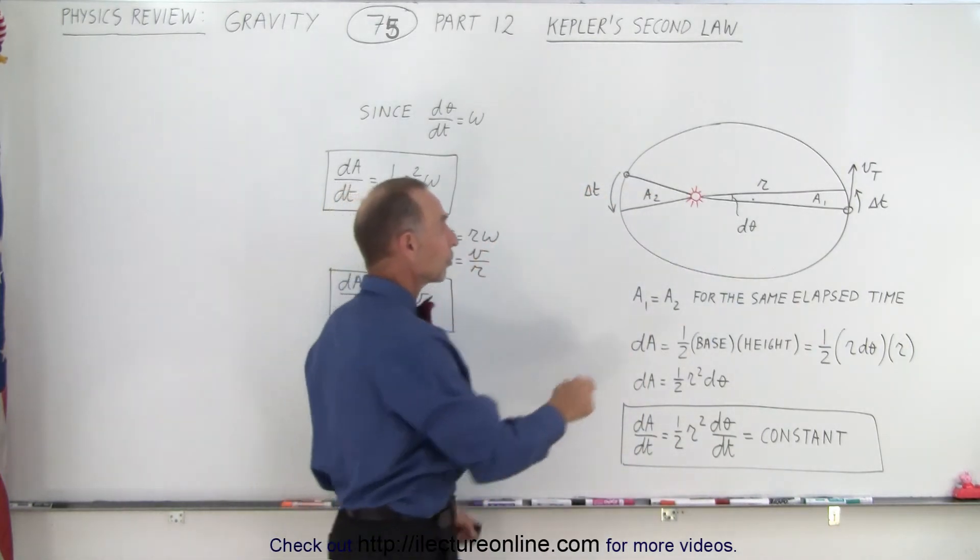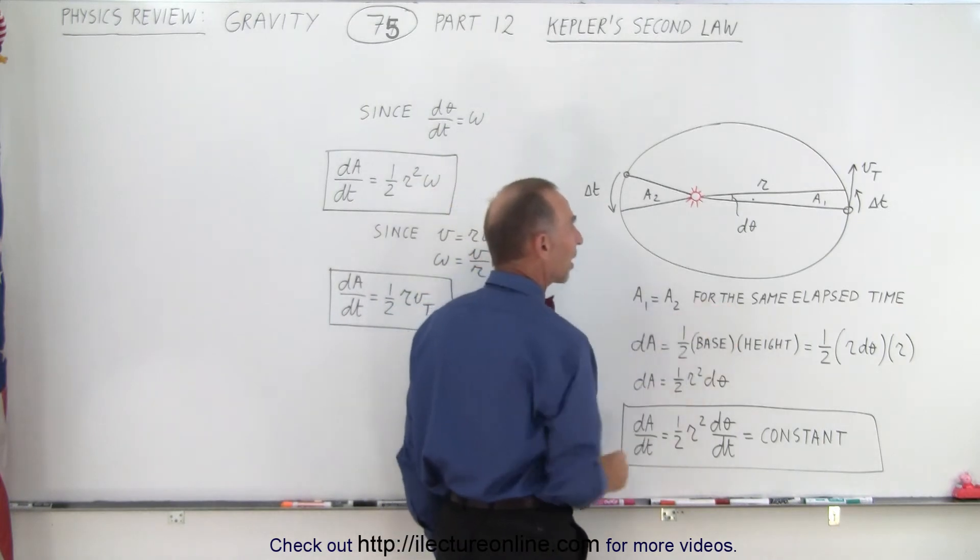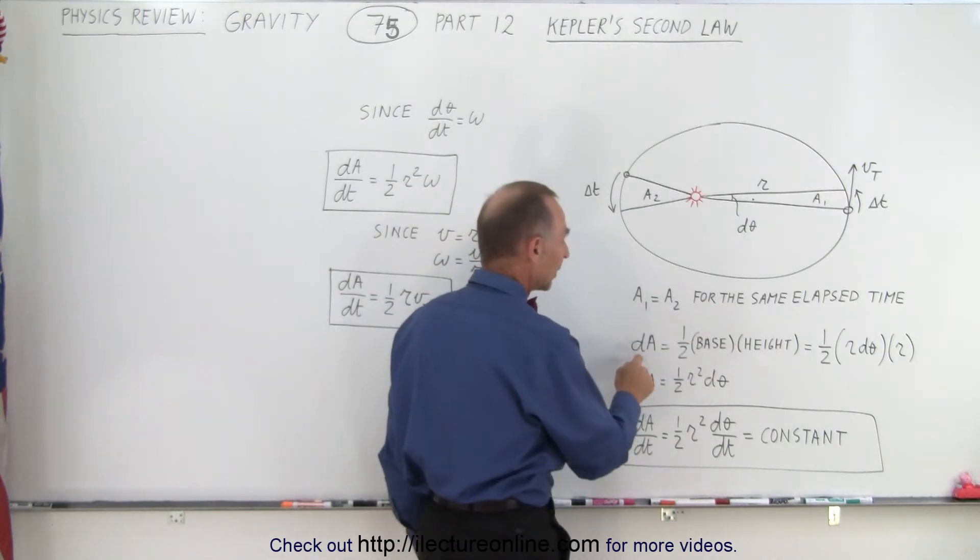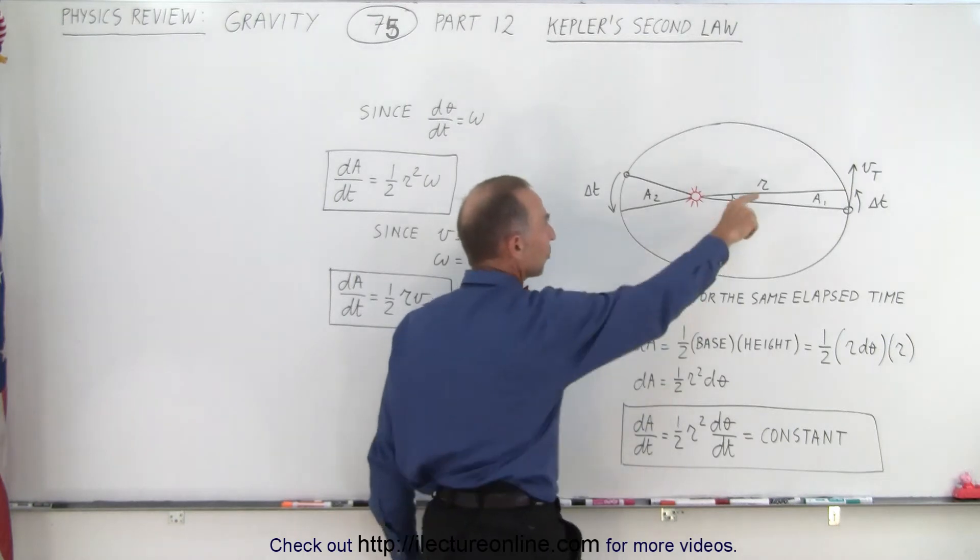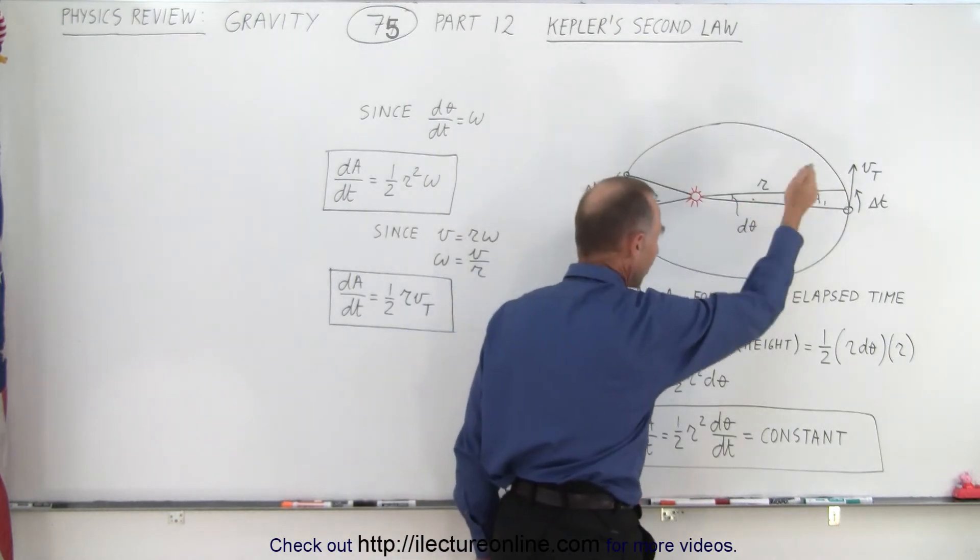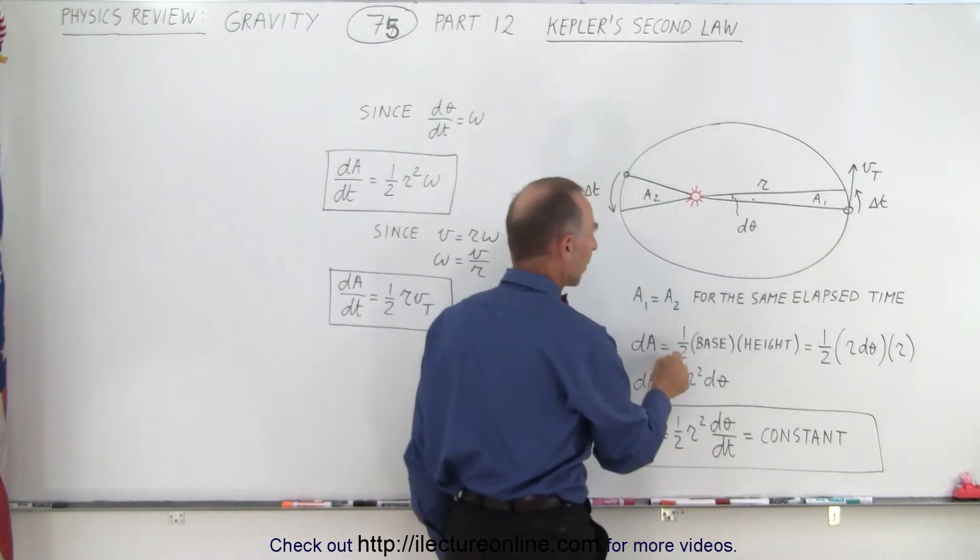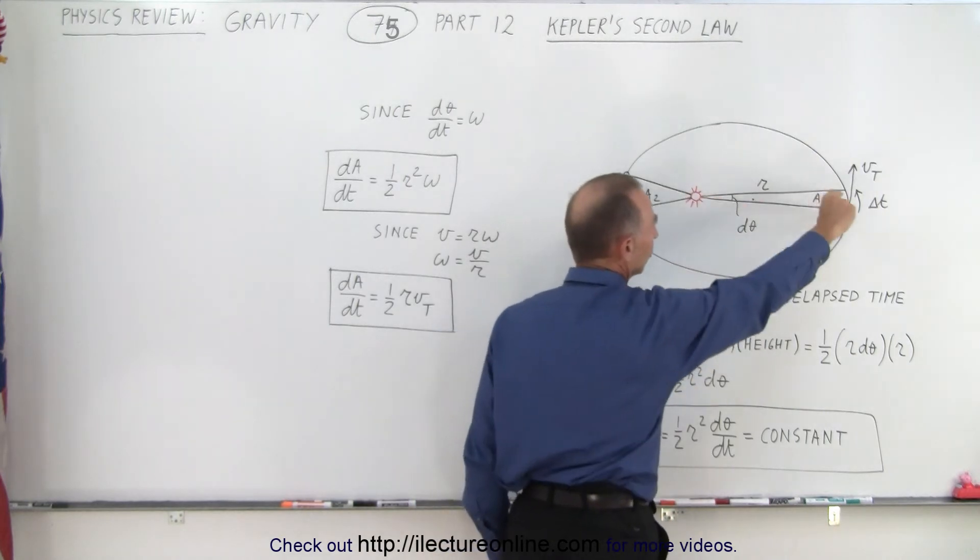So the area swept out are equal for the same elapsed time. So if we then say that the dA, the small amount of area that's covered under small amount of time is going to be equal to one half the base times the height, essentially this is a triangle.